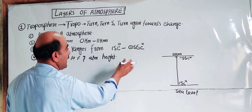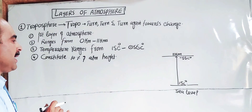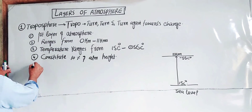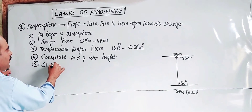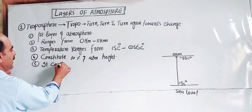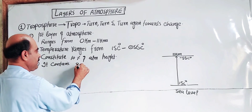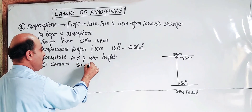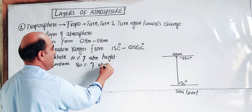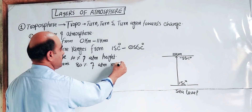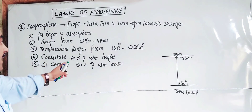The troposphere constitutes about 10% of the total atmospheric height. It contains about 80% of the total atmospheric mass.